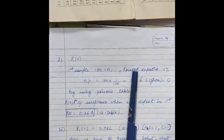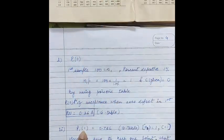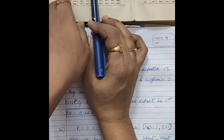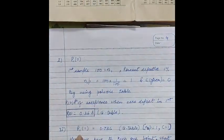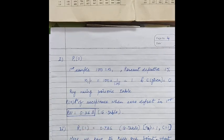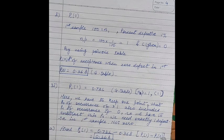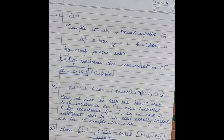Now the second condition: if we get 1 defective in the first sample, Np is 1 and C is 1. From the Poisson table, the value for Np=1 and C=1 is 736, so 0.736. However, this value includes the probability of 0 defectives as well. Since we want exactly 1 defective, we subtract the probability of 0 defectives: 0.736 minus 0.368 equals 0.368. So the probability of getting exactly 1 defective in the first sample is 0.368.